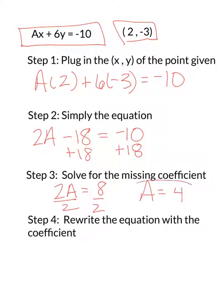And then if the test or question asks you to, then the last step can be to rewrite the equation. That would be 4x plus 6y equals negative 10. So there it is, finding the missing coefficient in standard form in 4 easy steps. Hope that was helpful. Thanks.